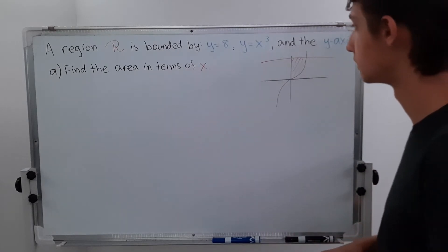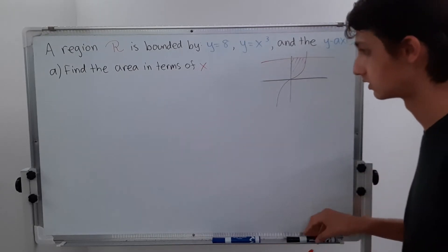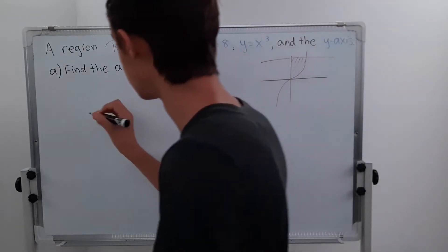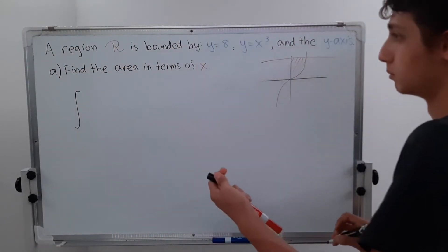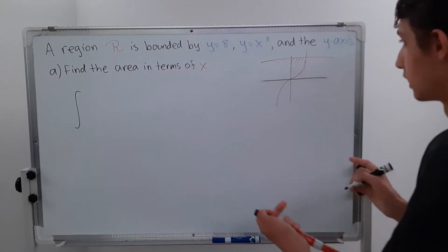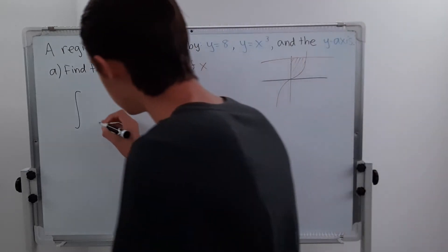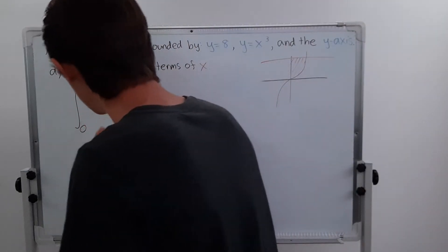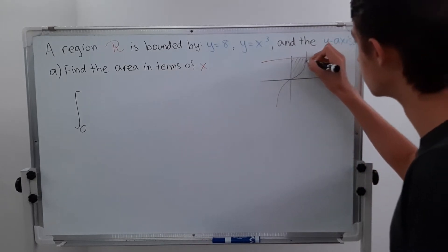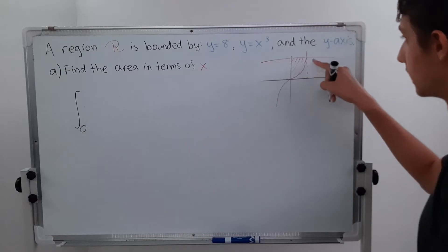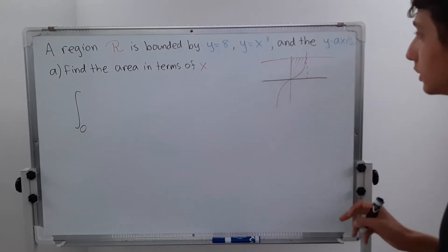We just have to find this area in terms of x. We need to set up an integral. It starts at 0 because that's where it crosses, so we can already put a 0 here. But we need to know what the upper bound is, because once we know that we can set up our integral pretty easily.